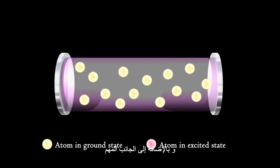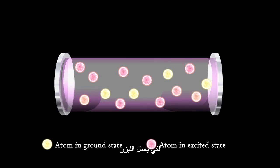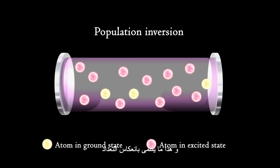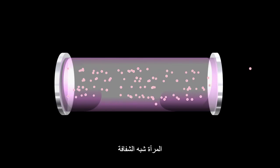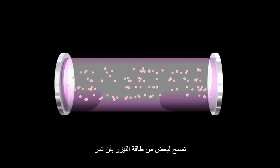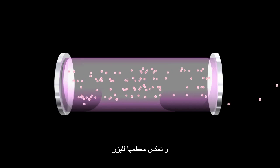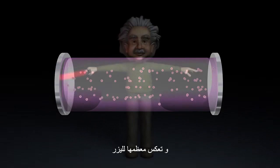A very important aspect is the fact that many atoms must be in an excited state. For a laser to work, more atoms must be in an excited state than in lower energy states. This is called population inversion. The semi-transparent mirror allows some of the laser energy to be emitted while bouncing most of it back through the laser.